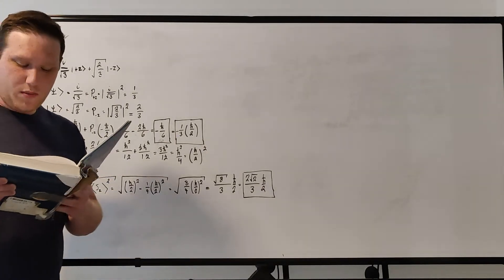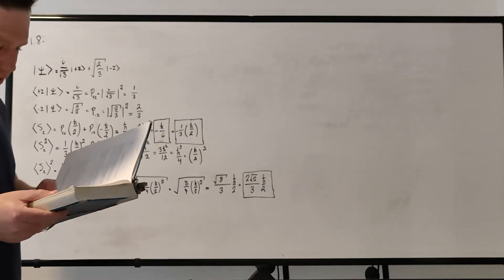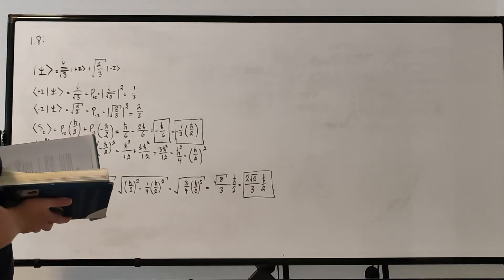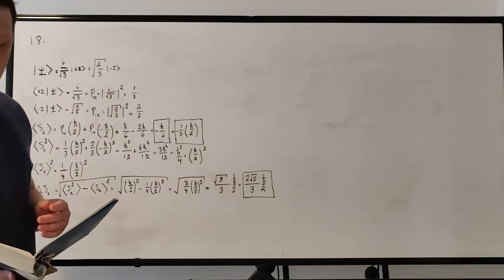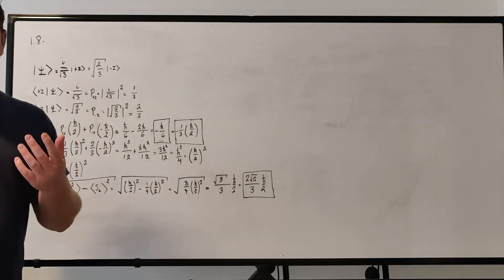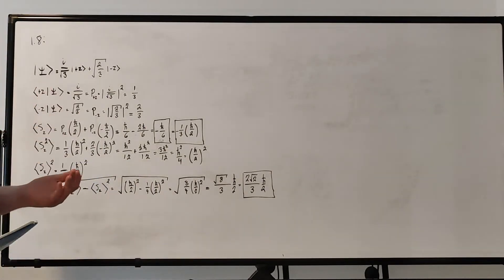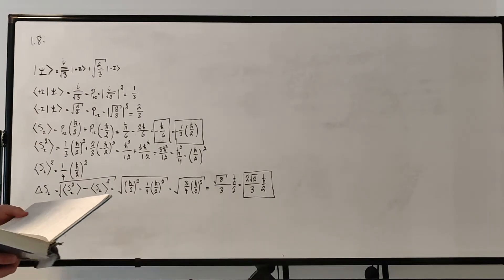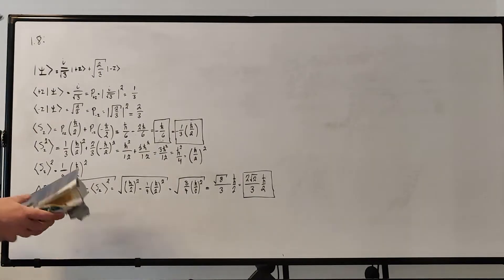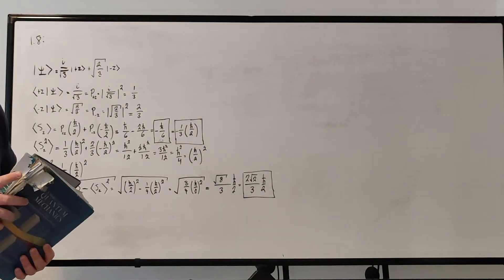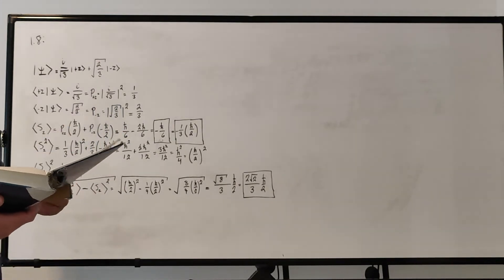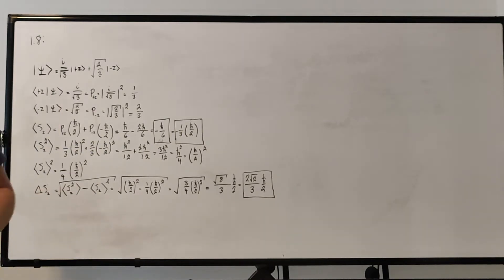Alright, welcome to Problem 1.8 of John Townsend's Modern Approach to Quantum Mechanics. I'm going to stop reading the problem statement word for word to avoid copyright issues. I'll just tell you what problem we're doing and the book — I assume if you're watching this, you have the book. I'm using the second edition, which is very rough and messed up but holding together. We're on problem 1.8, page 27. Let's jump right into it.